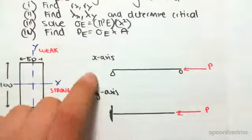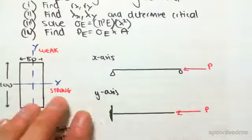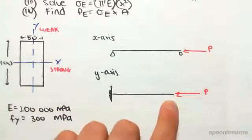Now we're looking at the x and y axis. On the x axis we have a pin joint and roller joint, and on the y axis it's cantilever out.